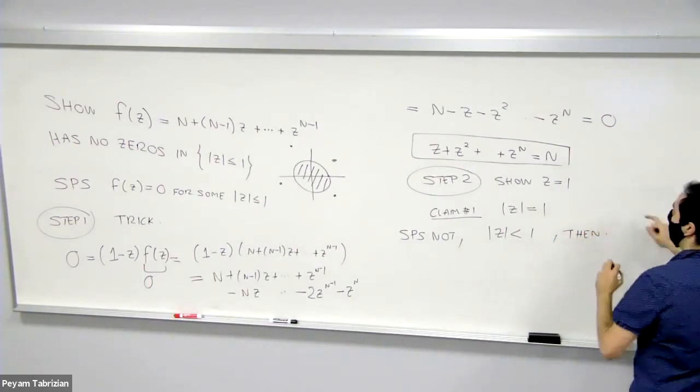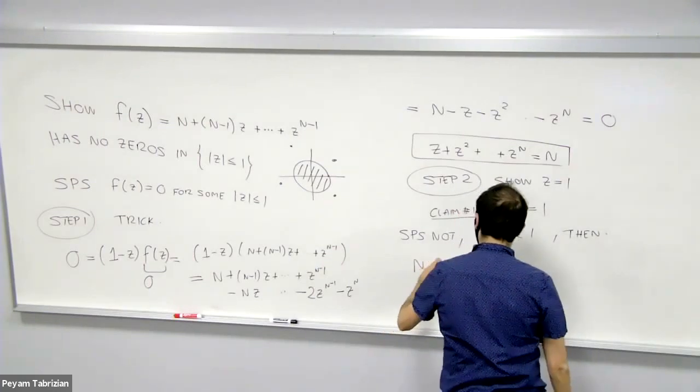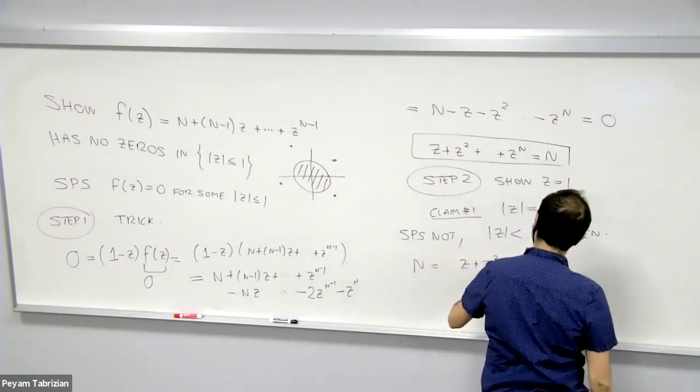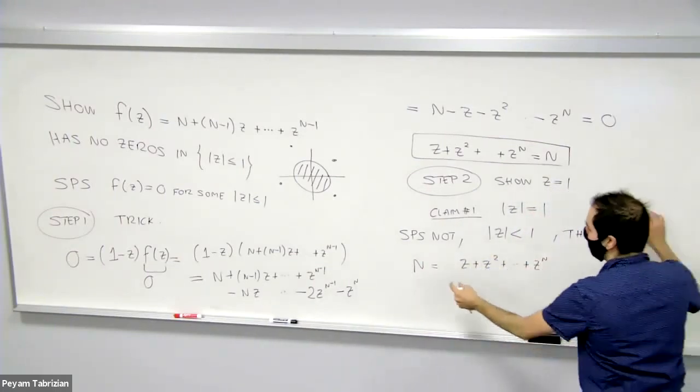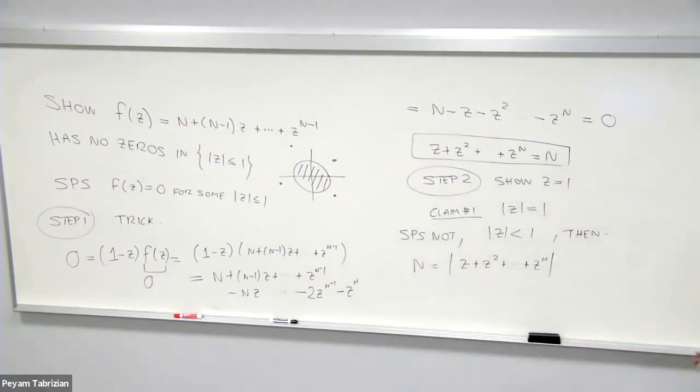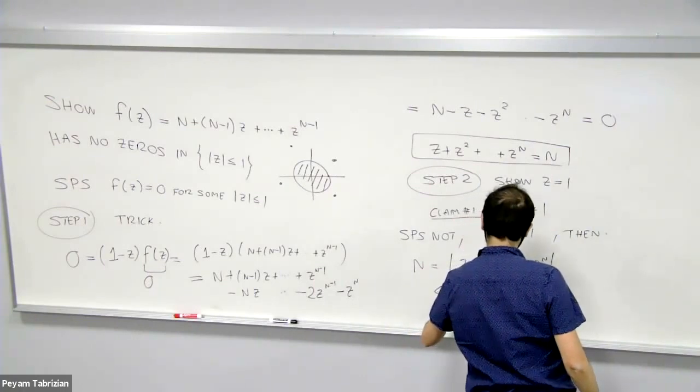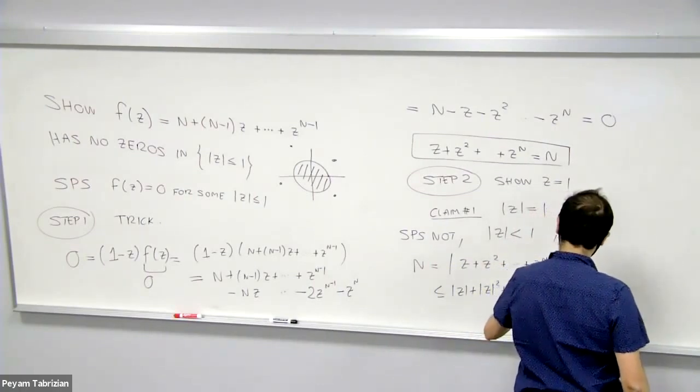Then take this identity. So n = z + z^2 + ... + z^n. But now take absolute value. So this is positive anyway. So take absolute values and use the triangle inequality. So that's ≤ |z| + |z^2| + ... + |z^n|.